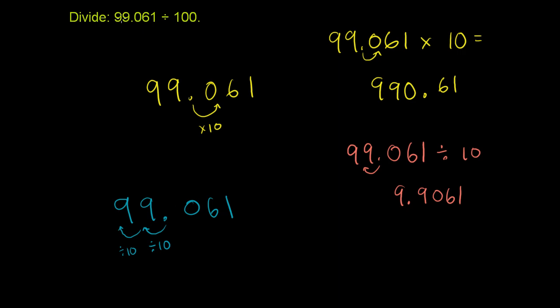So 99.061 divided by 100 is going to be equal to 0.99061. We're just going to shift the decimal to the left by 2. And we might want to put a leading 0 here just so it makes it a little bit easier to read.